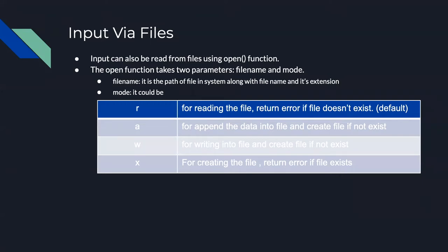Input can be read from a file using the open function, which takes two parameters: the file name and the mode. The file name is the path of the file including its extension, for example 'my_folder/input.txt'. The mode parameter can be R, A, W, or X. R is for reading — it returns an error if the file doesn't exist and is the default mode if you don't supply the mode argument.